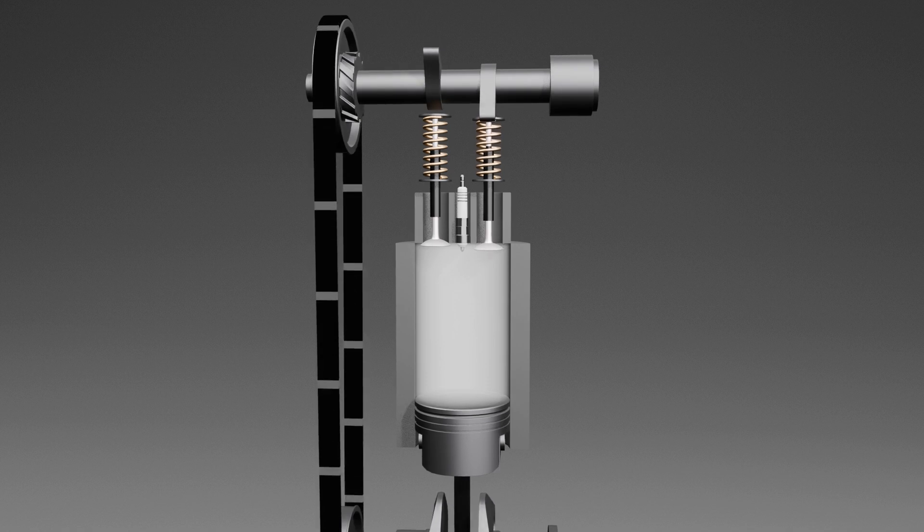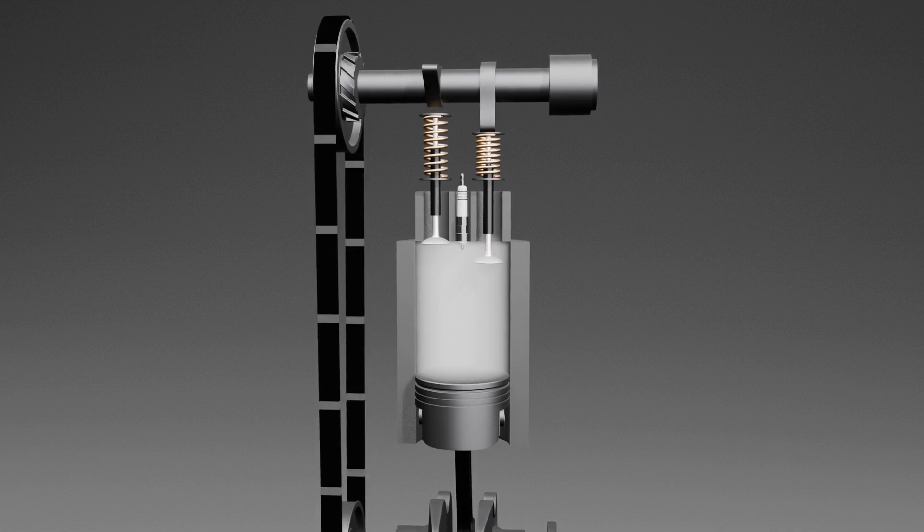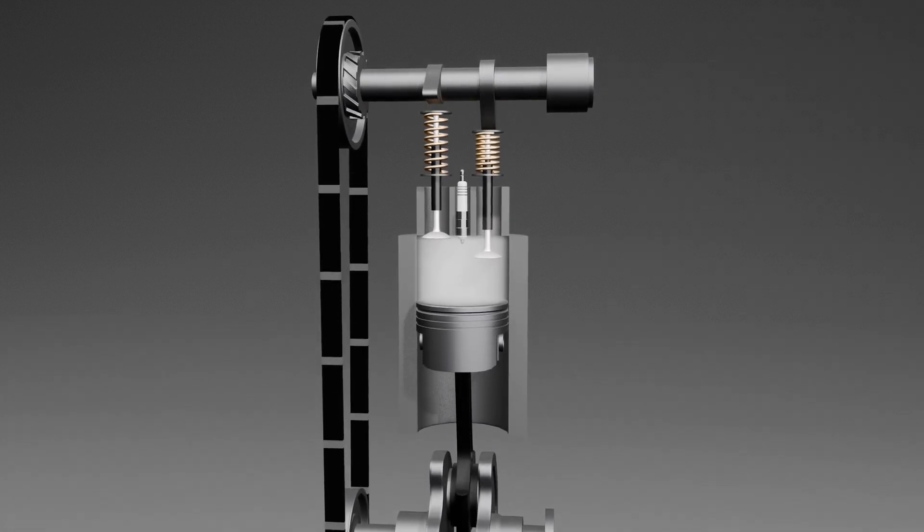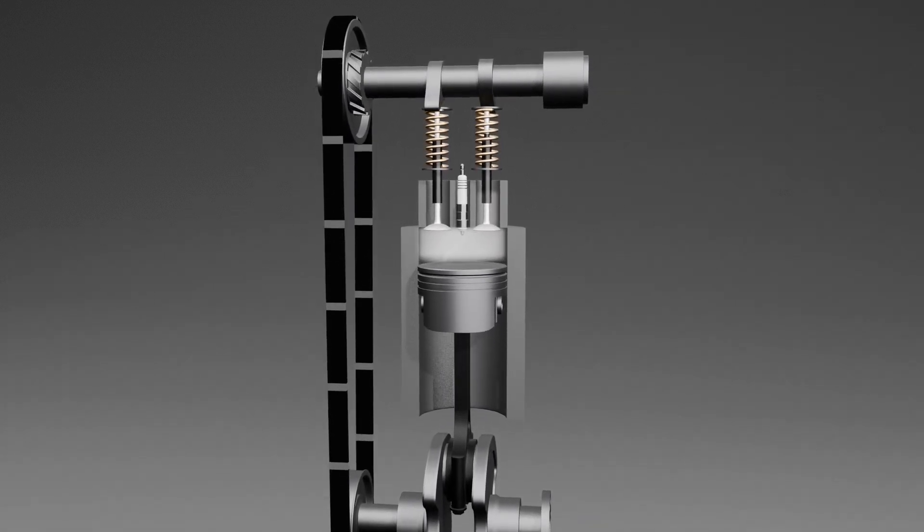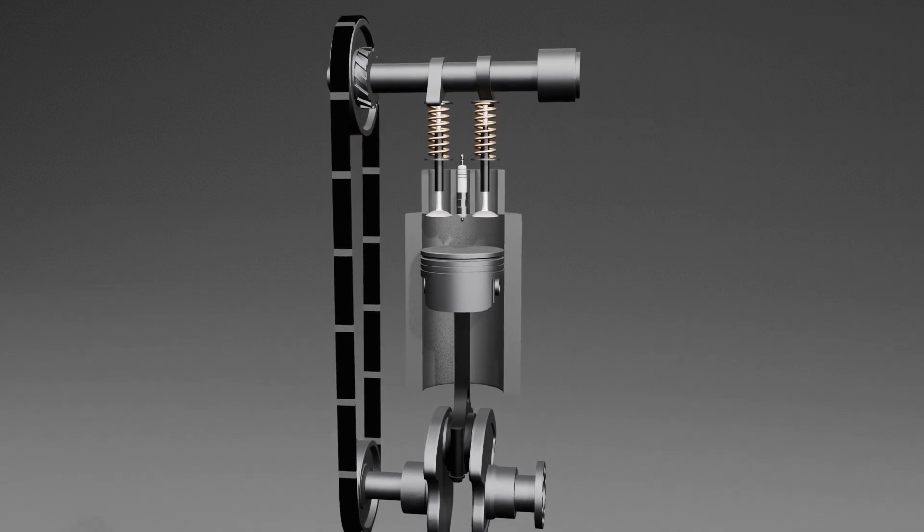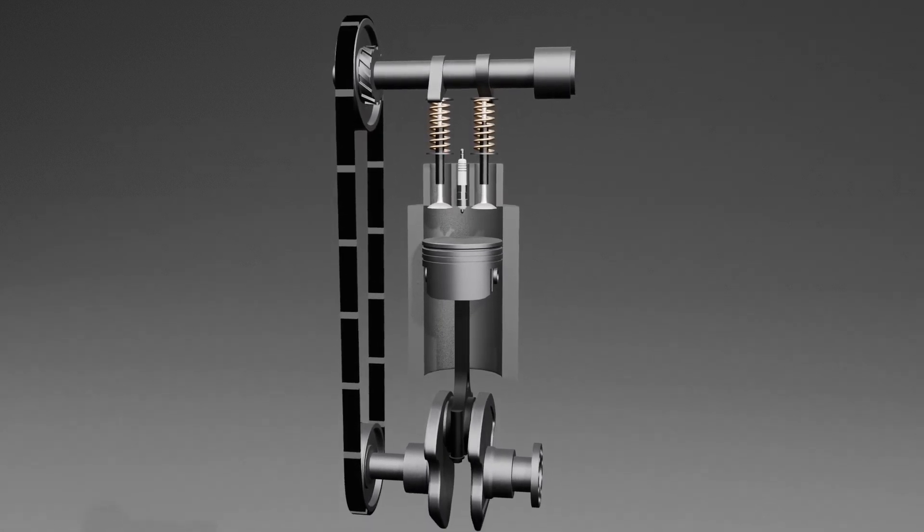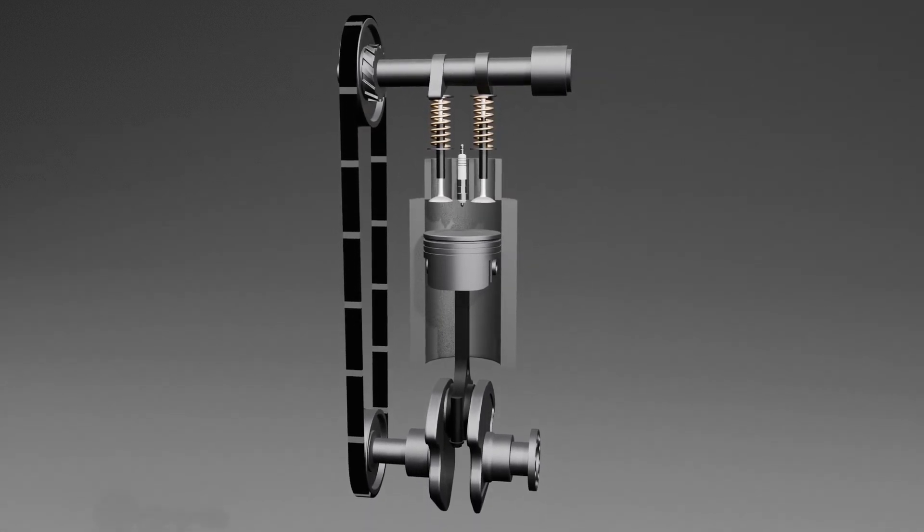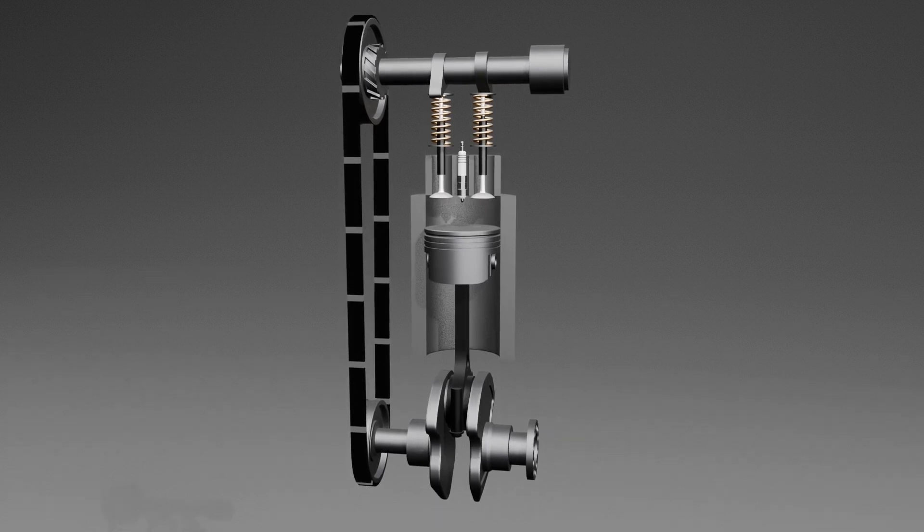The piston moves back up the cylinder, and this time, the exhaust valve opens, allowing the spent gases to escape through the car's exhaust system. By the time the piston reaches the top of the cylinder again, the cylinder is empty and ready to start the process all over again.